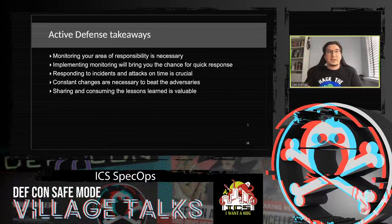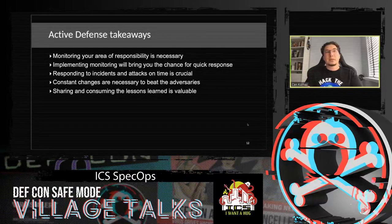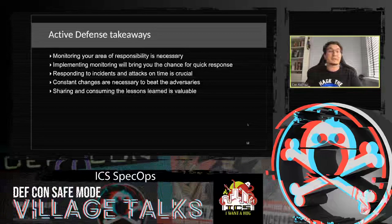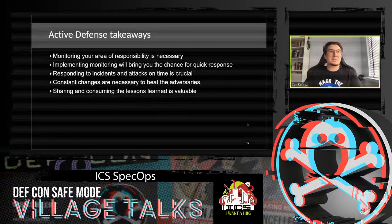The idea is monitoring your area of responsibility to get baselines and check for anomalies. Implementing monitoring gives you the chance for quick response when you see something odd. Responding to incidents on time is crucial — especially in industrial control systems, since it will cost you a lot if the ICS network is affected. Constant changes are necessary to beat adversaries, and you need to share and consume lessons learned with the community to develop better defenses.